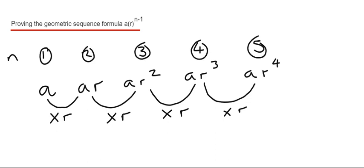So as you can see then, the power is always one smaller than our position number. So we write the formula down as A bracket R to the power of N minus 1.